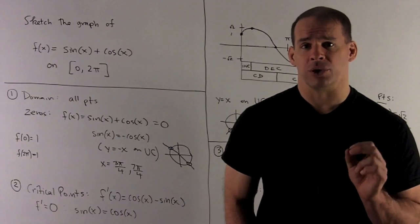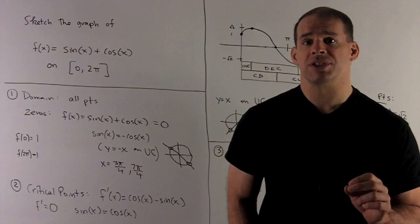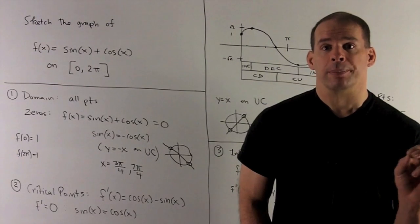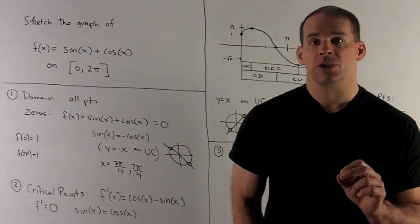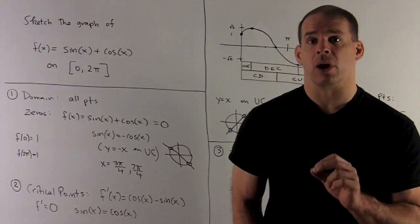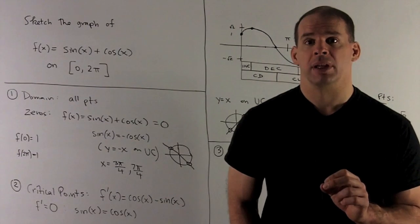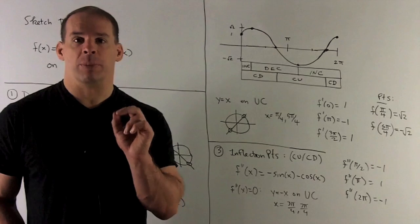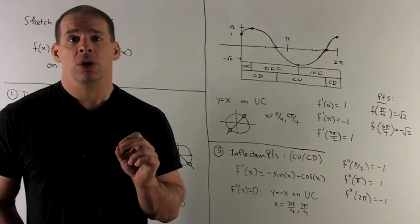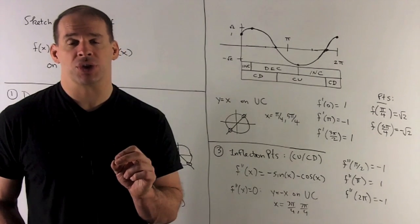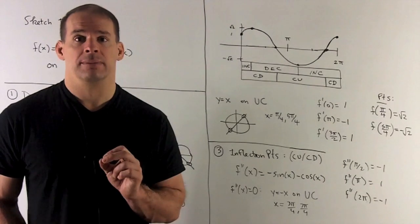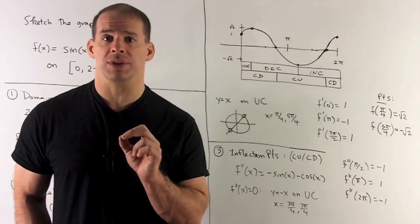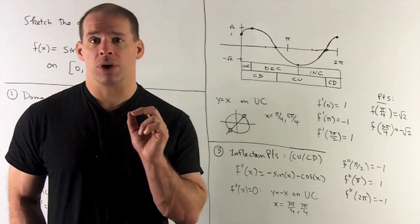We've done everything without taking a derivative, so let's hunt for critical points and regions of increasing and decreasing. The derivative is cos(x) - sin(x), which is defined everywhere, so critical points only arise where the derivative equals 0. We solve cos(x) = sin(x) by finding where the line y = x hits the unit circle — where x and y coordinates are equal. Those points are x = π/4 and 5π/4, giving us horizontal tangent lines at those values.